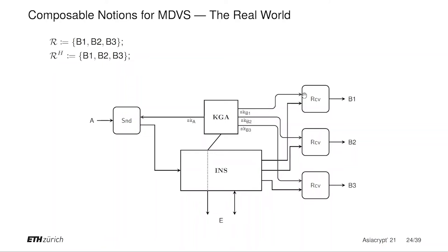From now on, we will consider that Bob3 is a dishonest party. This means, in particular, that Bob3 no longer runs its receive converter. Furthermore, it also means that Eve now has access to Bob3's secret key, which is leaked.